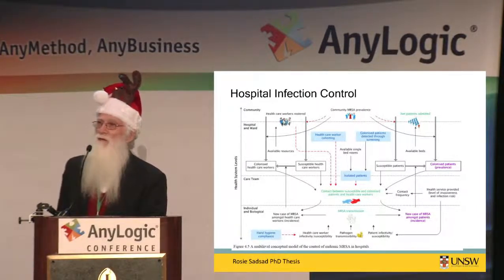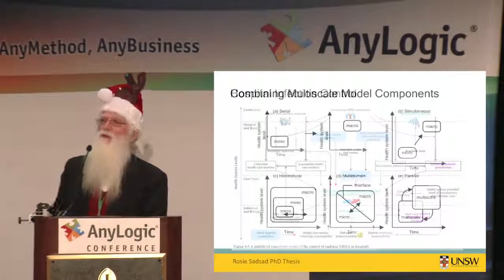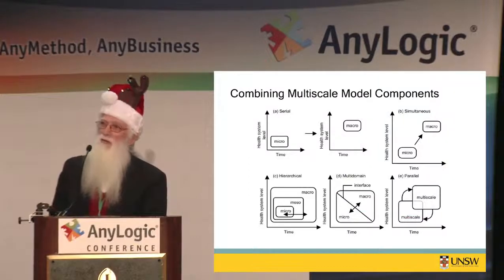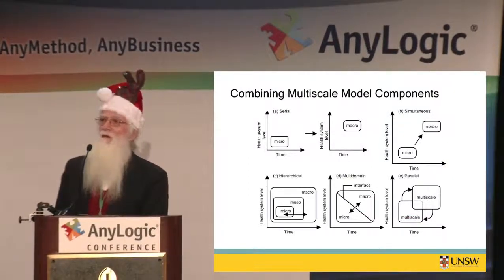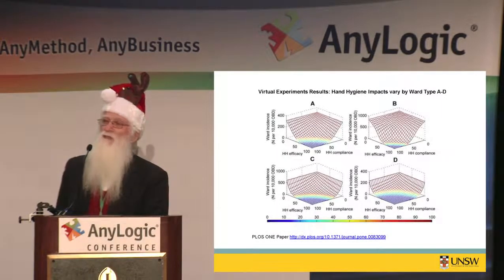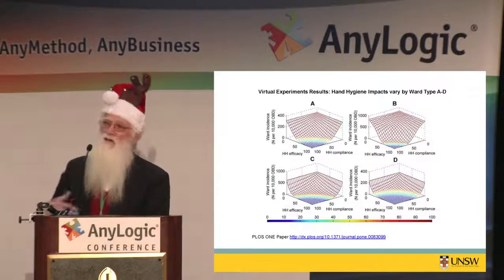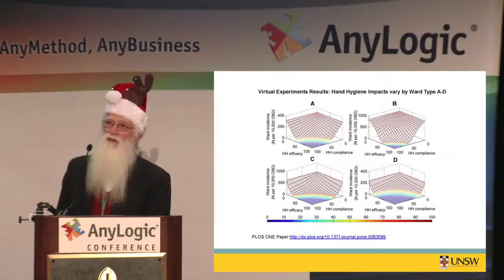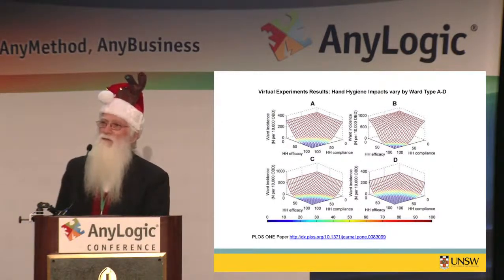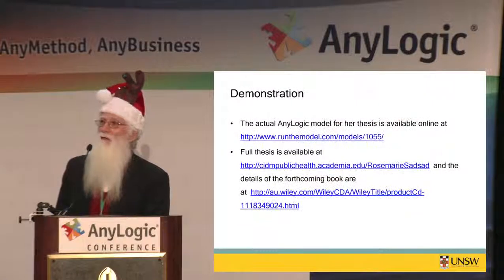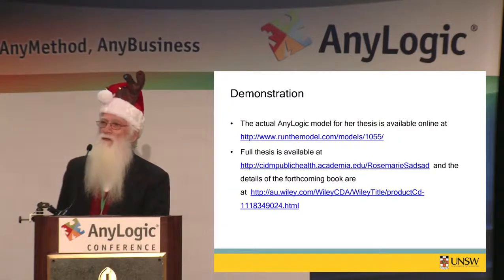These slides will be available. Based on that work, we then looked at how you build a framework to do that — how you look at combining multi-scale model components in different ways. The results were really a lot about producing confidence intervals and the interaction between hand washing and other strategies — quite interesting, not counter-intuitive effects. This has been published in PLOS One, accepted and out soon. The demonstration was available on Run the Model, and the full piece is available, along with links and a book on this multi-scale method.